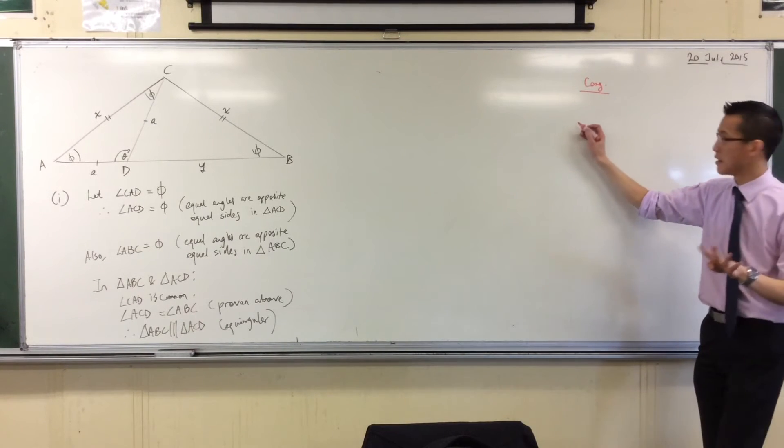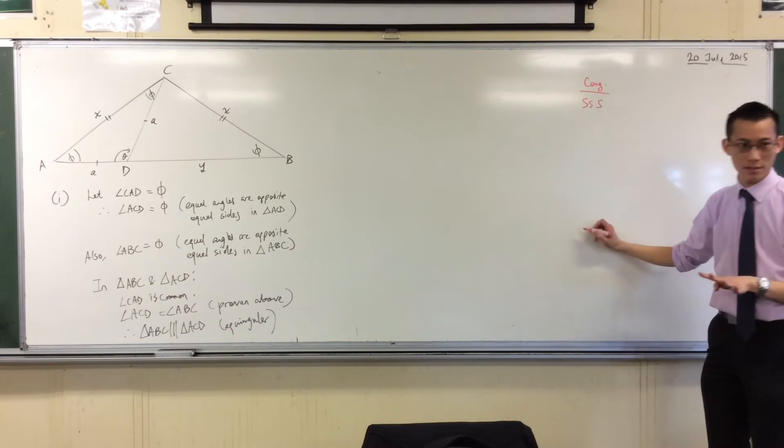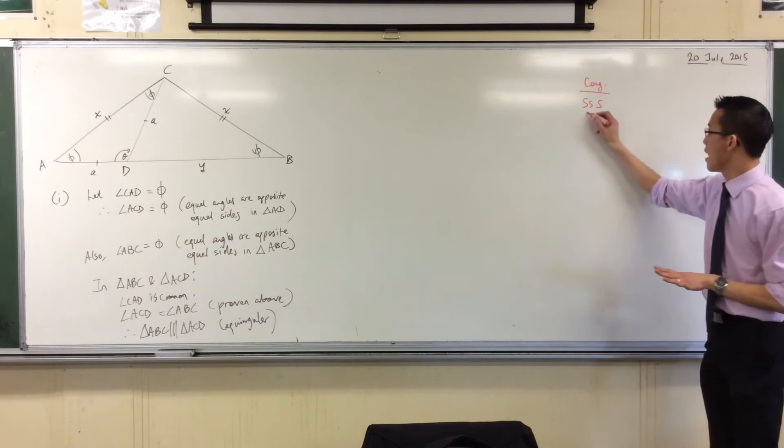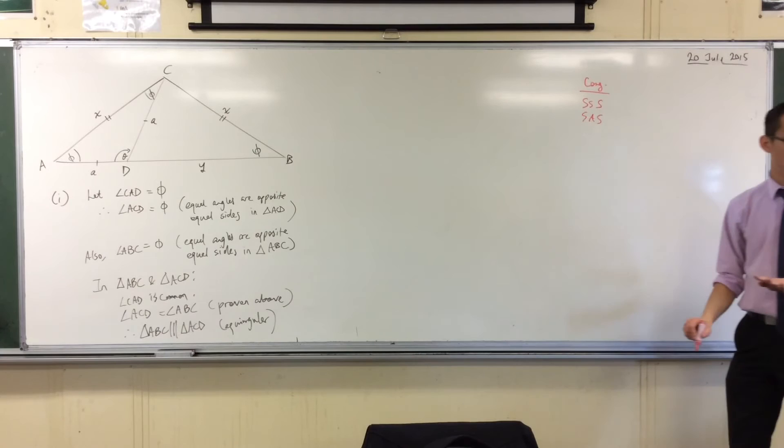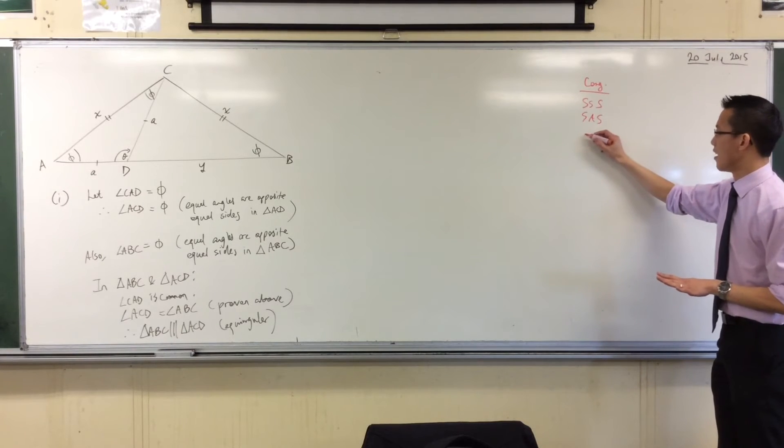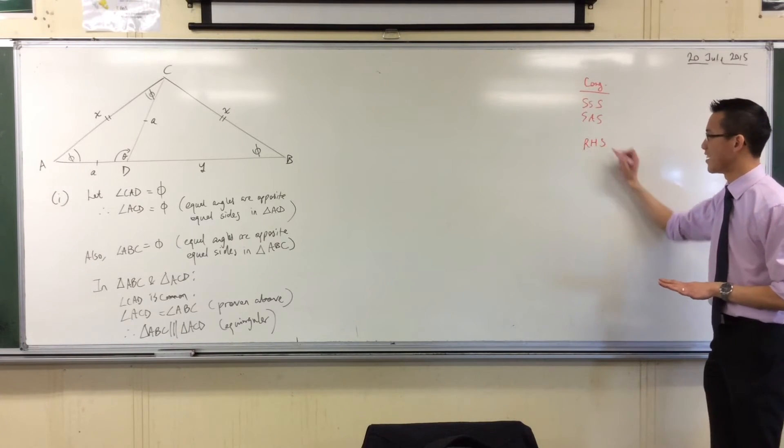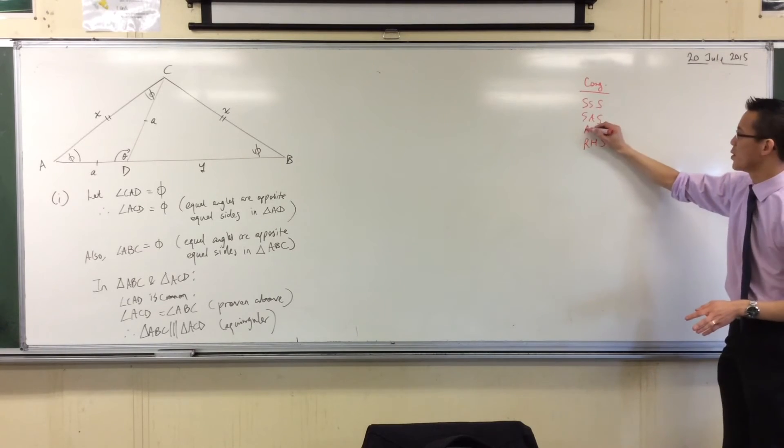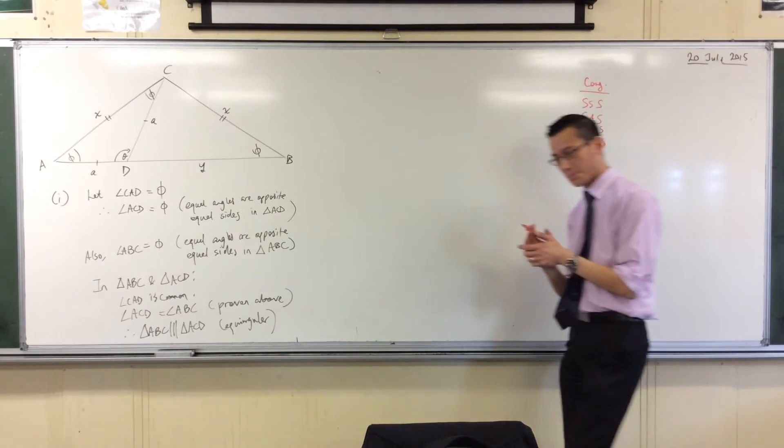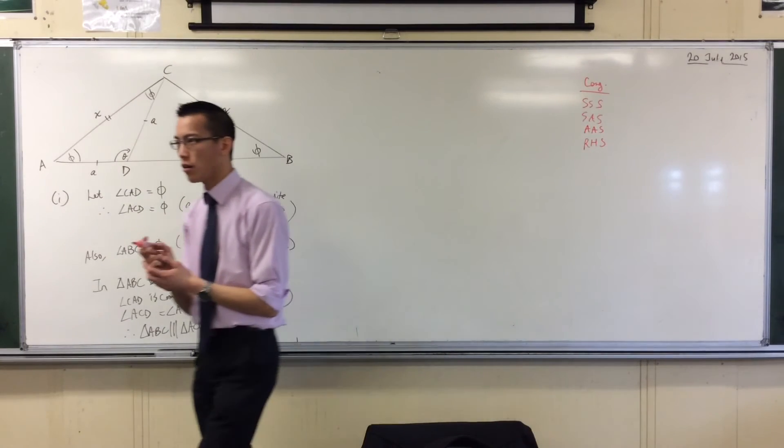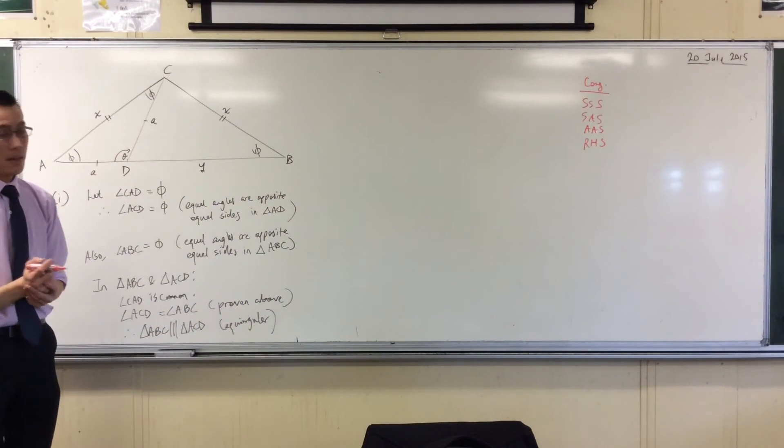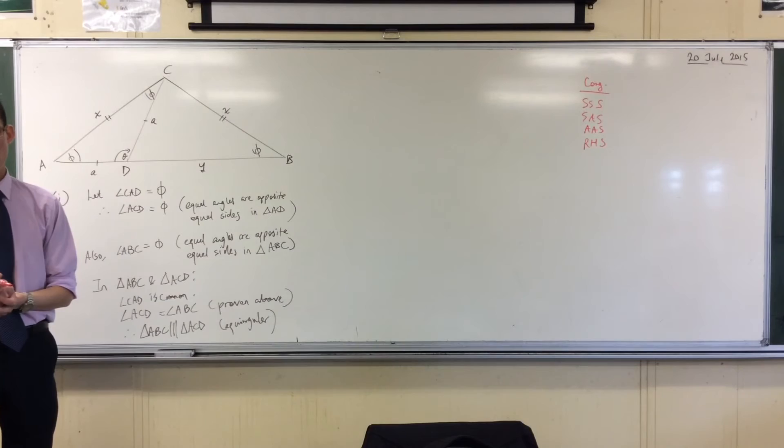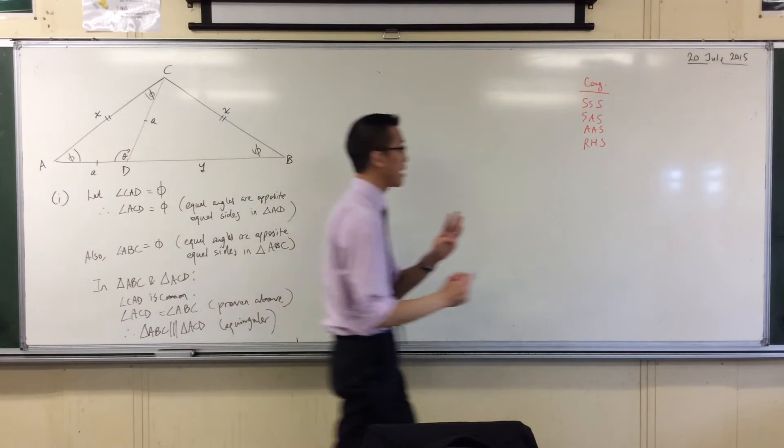Easiest one: SSS. Give me another one. SAS. Give me another one. I'll put RHS here. I want to follow a pattern here, so I'm going from sides to angles. Okay, pause. Four ways to prove congruence. If you haven't already spotted it, there are four ways to prove similarity.